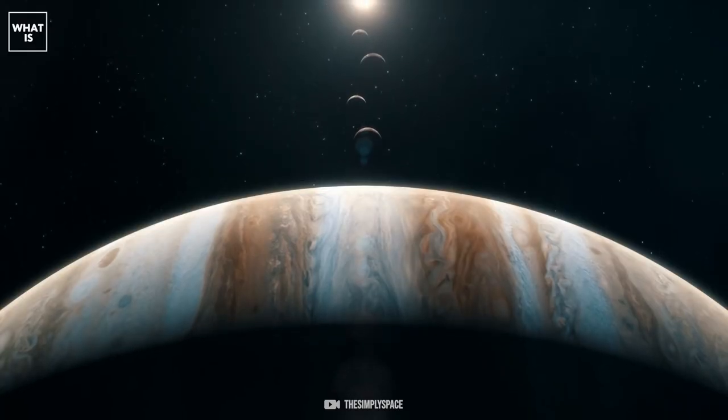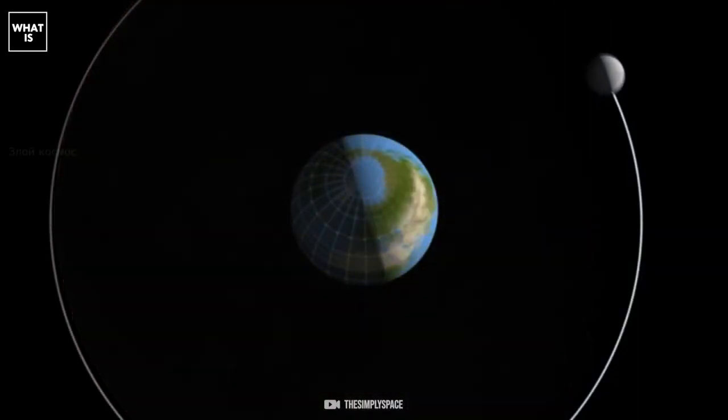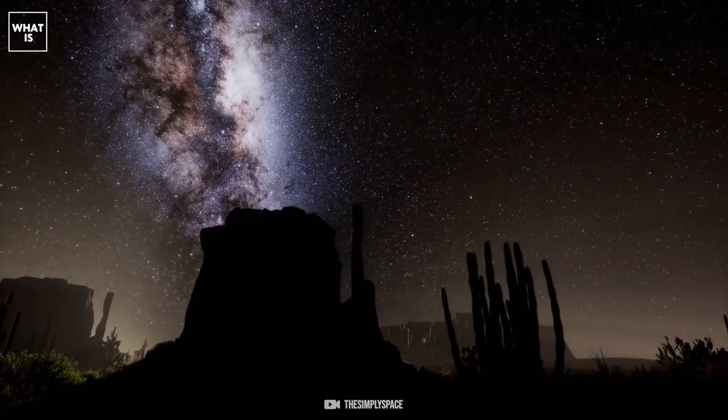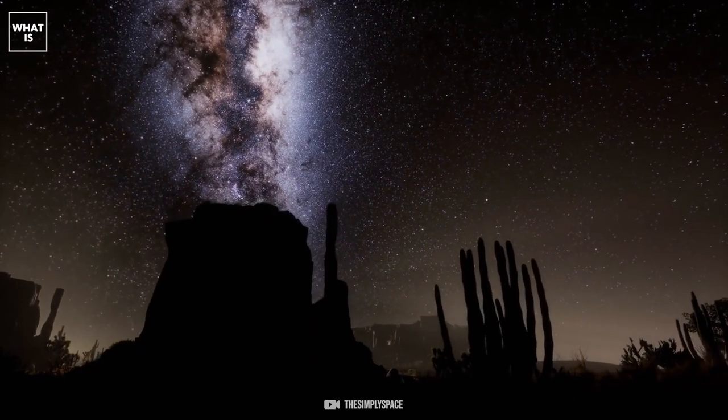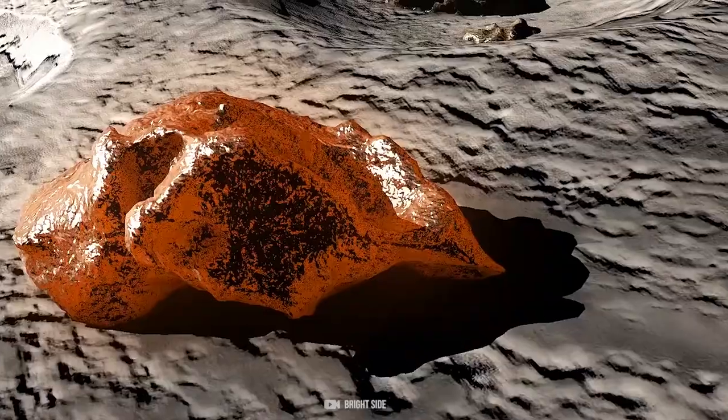At the center of the system is a star resembling the Sun. According to preliminary estimates, the moon is a gaseous cosmic body with dimensions slightly smaller than Neptune. However, it has an unusually large size.